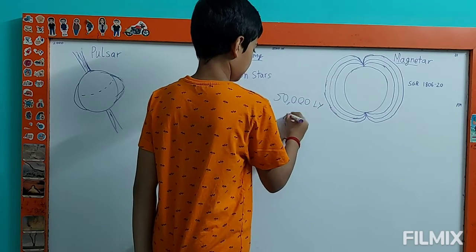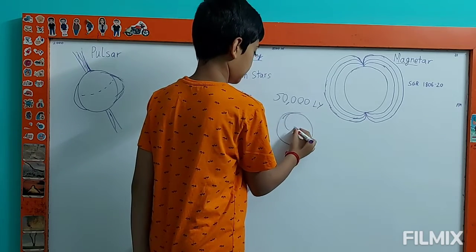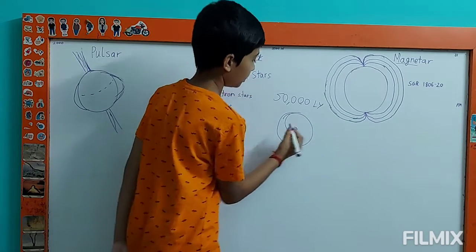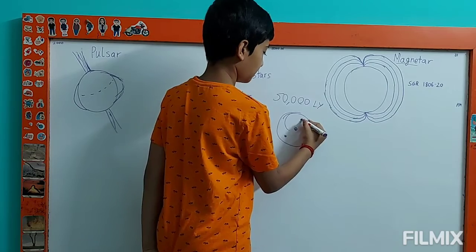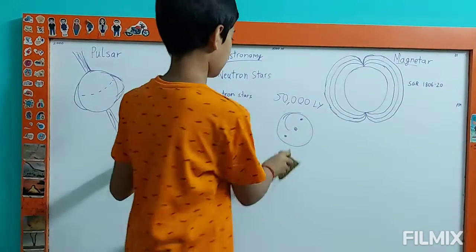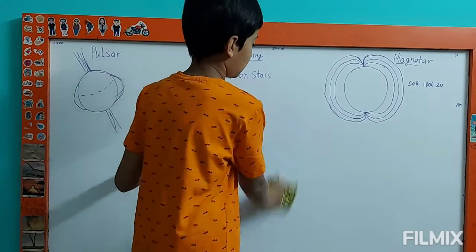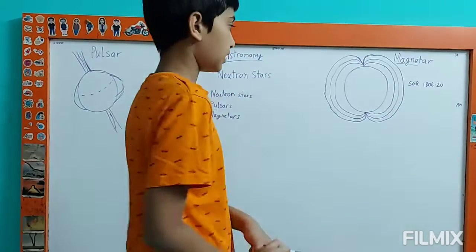If you take, this is the Milky Way, this is the center. We are around here. The magnetar would be around here, on the other side of the Milky Way. That is the closest and the first discovered magnetar.